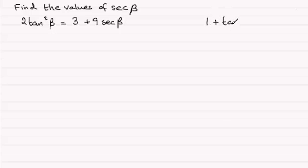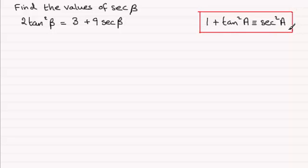is this one: 1 plus tan squared of an angle, let's say we call it θ, is identical to sec squared of that angle. So that's the identity that you should be familiar with. And from this we can make tan squared θ the subject. Tan squared θ would be identical to sec squared θ minus 1.